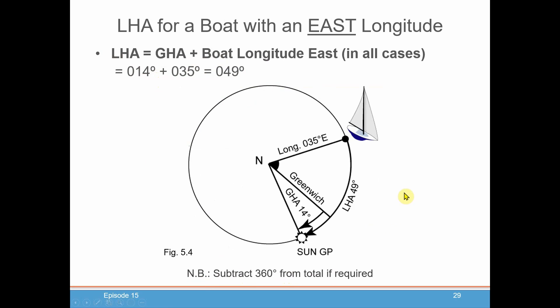Now for a boat that has an east longitude, so you're east of Greenwich, your LHA is going to be the GHA of your body, your celestial body, in this case again the sun. You will add the boat's longitude east to get the complete LHA from the boat to the sun. So again in our example...